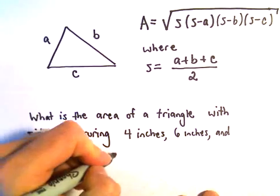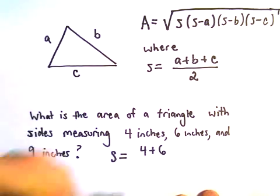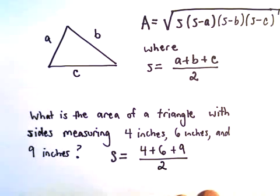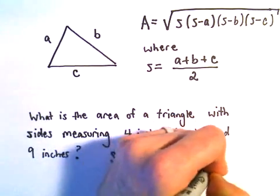Well, the first thing I would do would be to compute this semi-perimeter. So we'll take 4 plus 6 plus 9 and divide that by 2. 4 plus 6 is 10, plus 9 would be 19 over 2. I think I'm just going to leave it as a fraction for the time being.